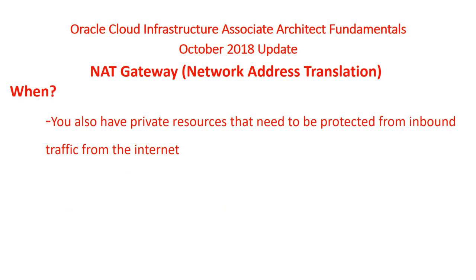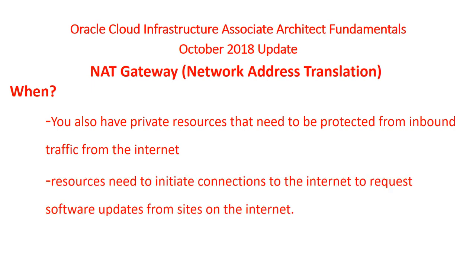When they are used, you also have a private resource that needs to be protected from inbound traffic from the internet. For example, you could have a database which holds the vital information of your customers and you don't want that exposed to the internet, so you put that in a private subnet behind a firewall. But that database still needs to access the internet to update security patches, or it could be sending out messages to the client. That's where NAT Gateway comes in — it's an extra security feature. The resources need to initiate connections to the software library and get the software updated.